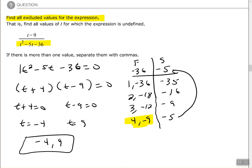Which means if I replace t in that expression with negative 4, my denominator will equal zero, or if I replace t with positive 9, my denominator will equal zero, which make those values excluded.